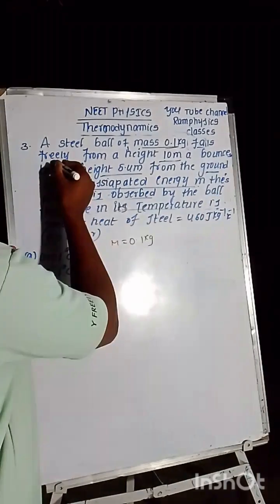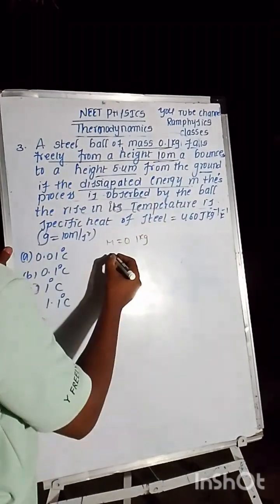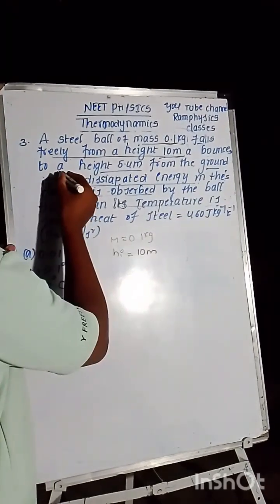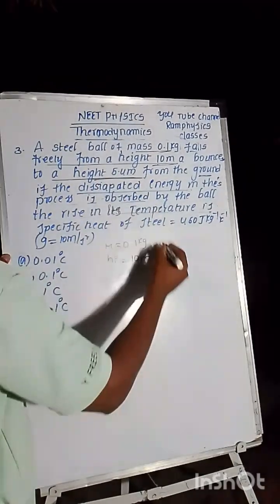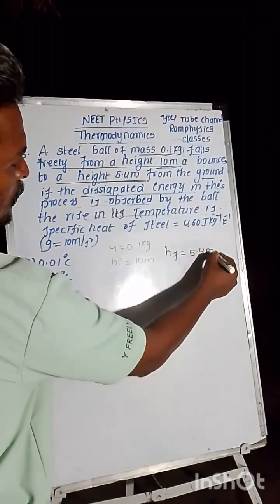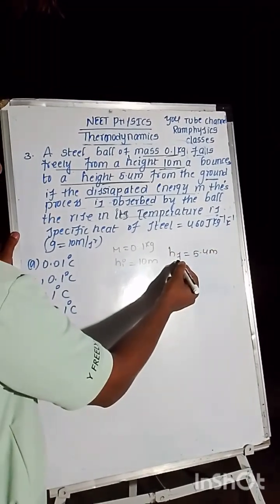It falls freely from a certain height, that is initially h_i is equal to 10 meters, bouncing to a height of 5.4 meters, that is h_f is equal to 5.4 meters, that is the final height.